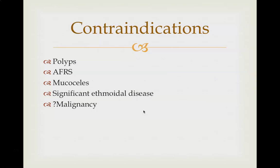The contraindications are polyps, fungal rhinosinusitis, mucocele, and significant ethmoidal disease, because balloon sinuplasty cannot be done for the ethmoids. It can be done for the sphenoid and frontal sinus — most of the time it is done for the frontal sinus, because it is difficult to access the frontal sinus with powered instruments, and powered instruments can lead to a lot of fibrosis and osteogenesis. In malignancy, the use of a balloon is also not indicated.